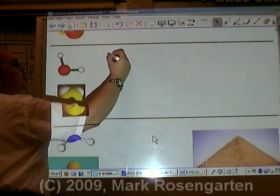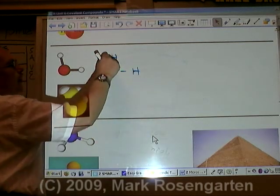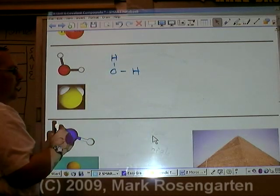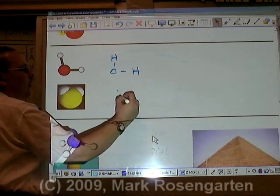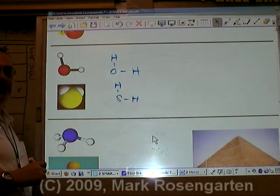For example, H2O, where the oxygen is central and the two hydrogens are bonded off of it. Or H2S, hydrogen sulfide, where sulfur is the central atom and the two hydrogens are bonded off of it.